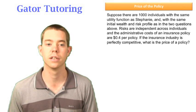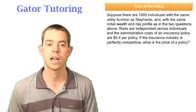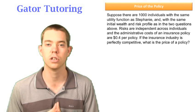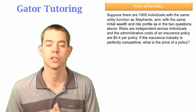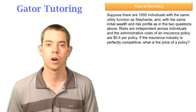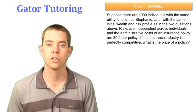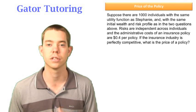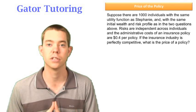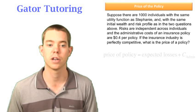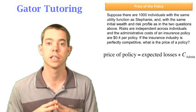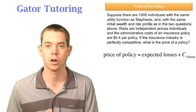The next question says, suppose that there are 1,000 individuals with the same utility function as Stephanie and with the same initial wealth and risk profile. So we're going to use all the information from the previous question. It says risks are independent across individuals and the administrative cost of an insurance policy is $0.40 per policy. If the insurance industry is perfectly competitive, what is the price of a policy? Well, perfectly competitive means they're not making a profit so that the price of a policy is going to be equal to the expected losses plus the administrative cost.